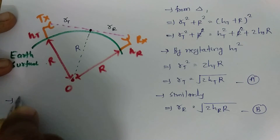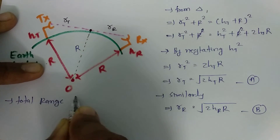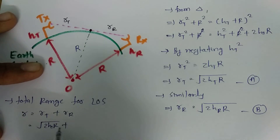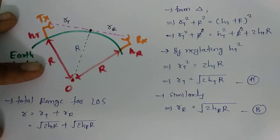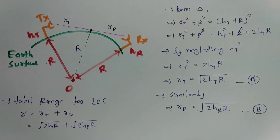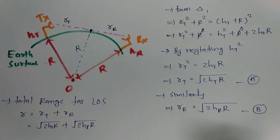The total range for LOS communication, r = RT + RR = √(2·HT·R) + √(2·HR·R). That is how we calculate the total range for line of sight communication. In summary, in LOS communication the signal travels straight from transmitting antenna to receiving antenna with no bending. There are two categories of space wave propagation: satellite communication and line of sight communication. Satellite communication is a very different subject, but both apply to space wave propagation.